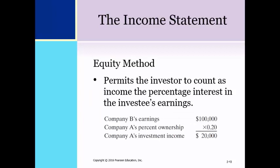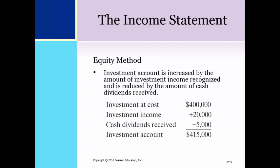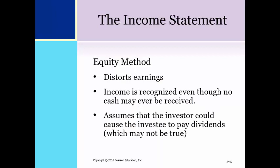The equity method permits Company A to report its 20% ownership in Company B's earnings of $100,000, or $20,000, instead of the dividend income of $5,000. The investment account under the equity method is increased by the amount of investment income recognized of $20,000 and is decreased by the dividends received of $5,000, resulting in a $415,000 balance reported in the financial statements. The equity method distorts earnings because income is recognized even though no cash may ever be received, and it assumes the investor could force the investee to pay the dividends, which may not actually be true.